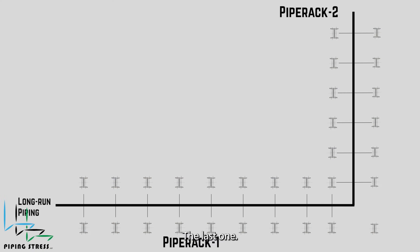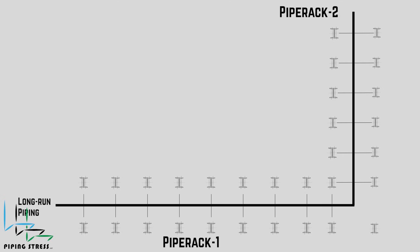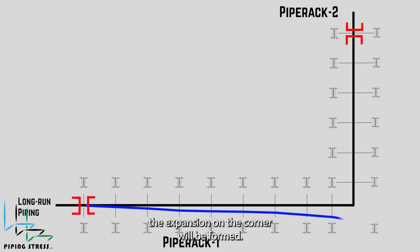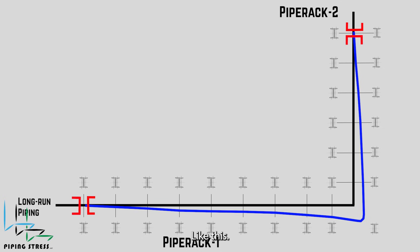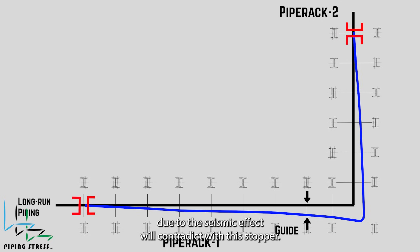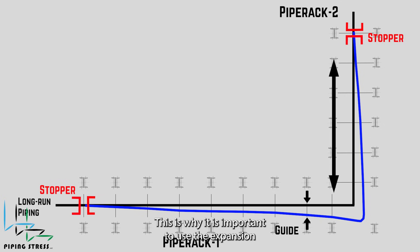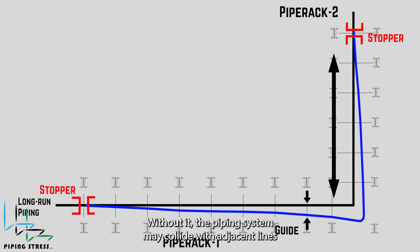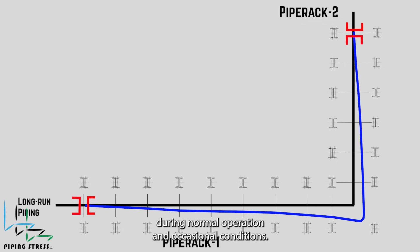Consider that two pipe racks are perpendicular to each other. If we put the pipe stopper at the natural zero point, the expansion on the corner will form in a specific way. Any guide requirement here, due to the seismic effect, will contradict this stopper. This is why it is important to use the expansion loop to manage expansion with the help of restraints. Without it, the piping system may collide with adjacent lines during normal operation and occasional conditions.